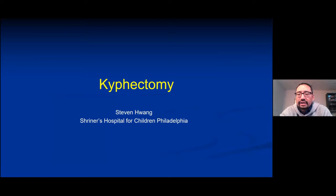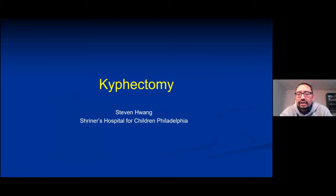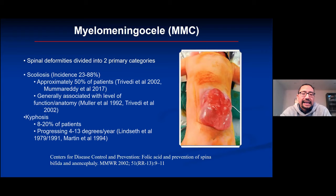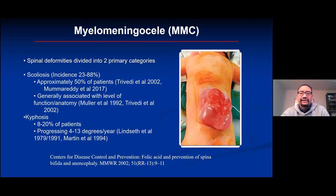I'll be talking about kyphectomy, a very specific condition in myelomeningocele patients. These are my disclosures — nothing relevant to this talk. Myelomeningocele patients have two primary deformities. Scoliosis affects anywhere from 23 to 88% of these children. Incidence is tied to functional level: thoracic-level deficits carry roughly 90% risk, while sacral-level myelo patients have closer to 8–10% risk, giving an overall rate of about 50%.